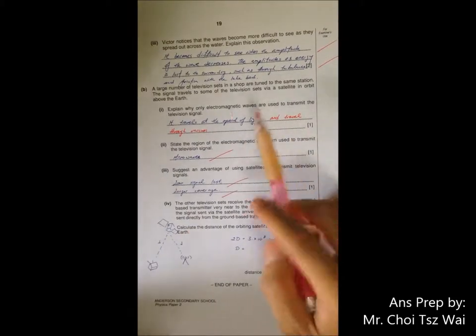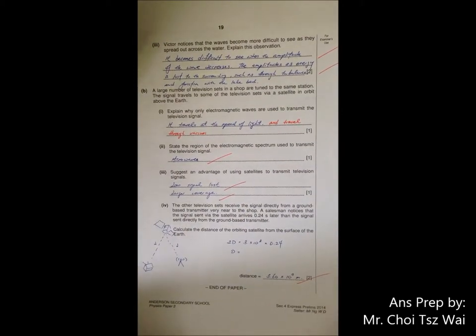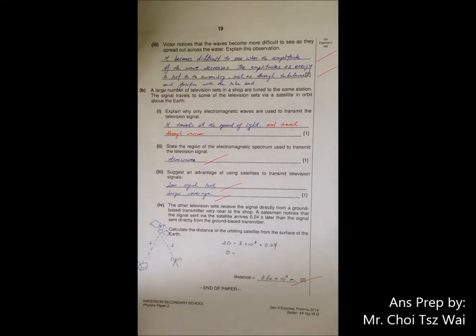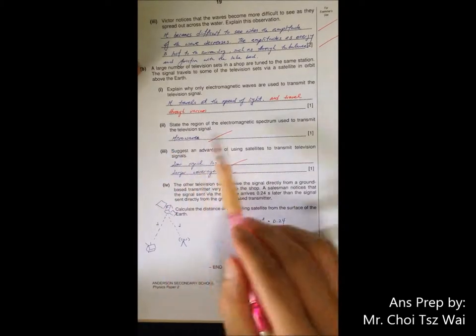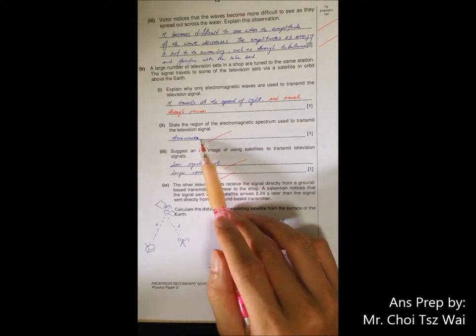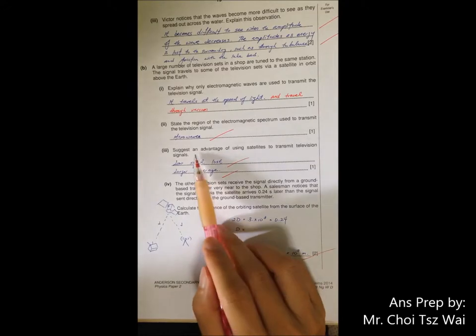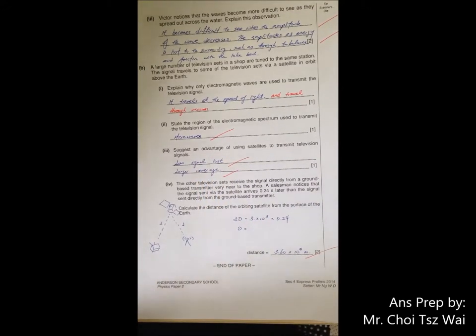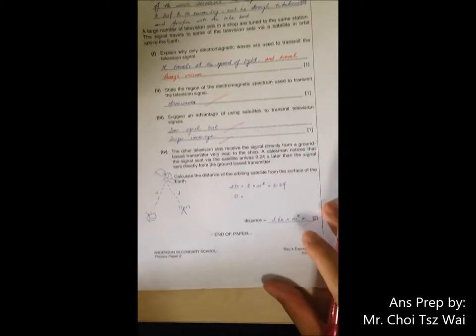Why do you use electromagnetic wave? Because it travels at the speed of light. So transmission is very rapid. And number two is because it can travel through vacuum. That's why you don't use longitudinal wave. Part two, satellite TV has to use microwave because you need high frequency. Advantage. Advantage could be low signal loss, larger coverage, et cetera. You have quite a lot in the book.